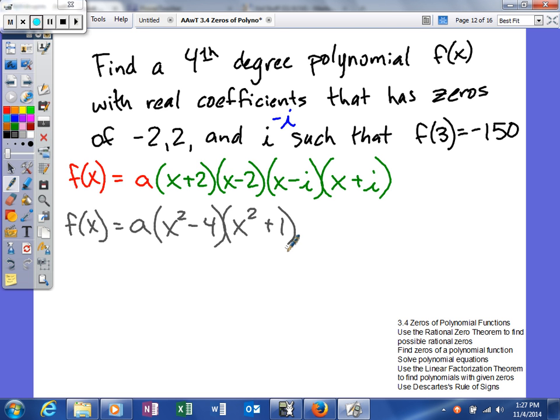So lastly, what we're going to do is multiply these two together. So we'll get f(x) is equal to a, and then we'll actually end up with x to the fourth, and then minus 3x squared, and then minus 4. Now I did that math in my head, but x squared times x squared is x to the fourth. This will give me a positive x squared, and a negative 4x squared will add to give me negative 3x squared, and negative 4 times positive 1 is negative 4. So now we have our polynomial.